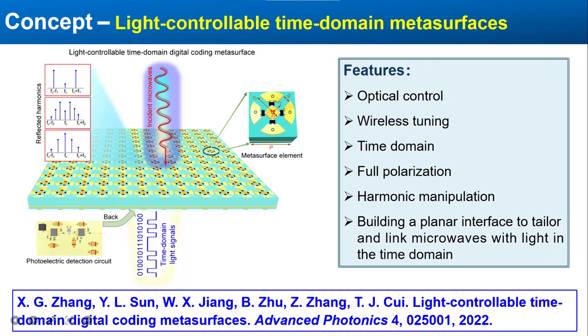Therefore, by applying a light signal with a specific time-coding sequence onto the metasurface, it is able to generate a group of harmonics based on phase modulation.